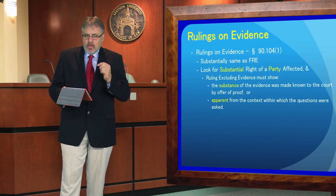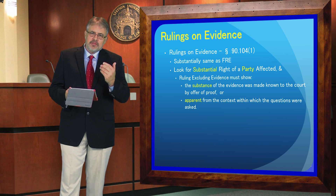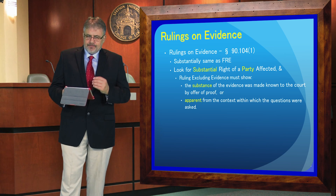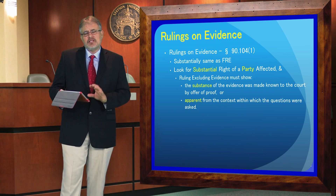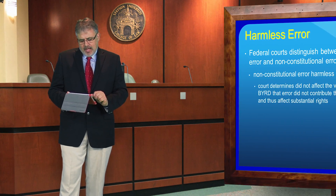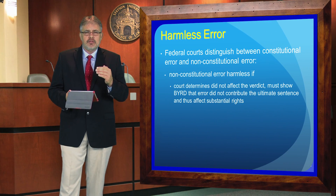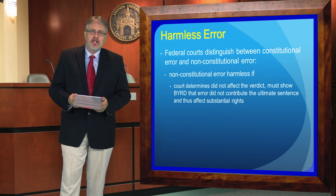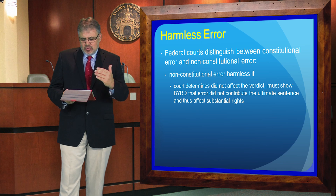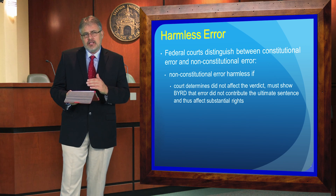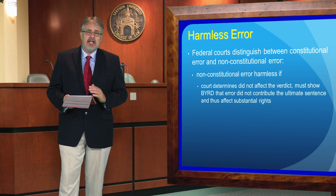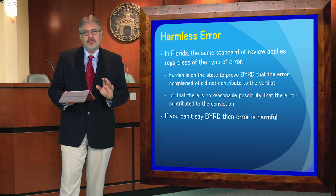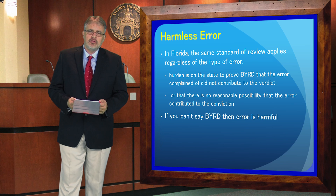In the federal rules, we look for the substantial right of the party that's going to be affected. The same standard is applied from a Florida perspective, and you can see that on the slide. They play out pretty much the same way, so we're not too concerned with the differences from the standpoint of the substantial right involved. But if I look at the differences of error when there's a mistake on an evidentiary ruling, you can see from the slide that in fact the federal courts divide things into constitutional and non-constitutional error. They then look at the verdict and ask whether, to a beyond a reasonable doubt standard, the mistake did not influence the verdict.